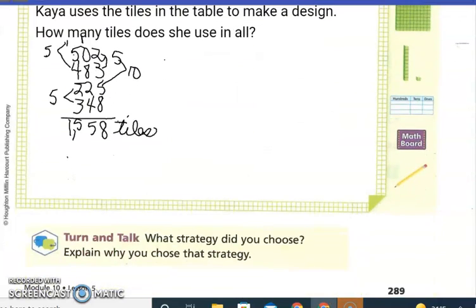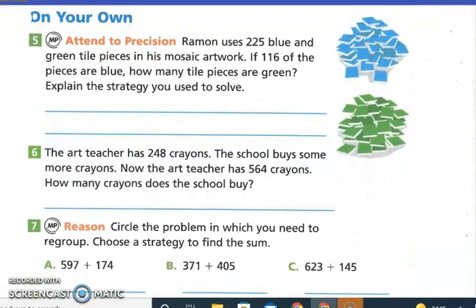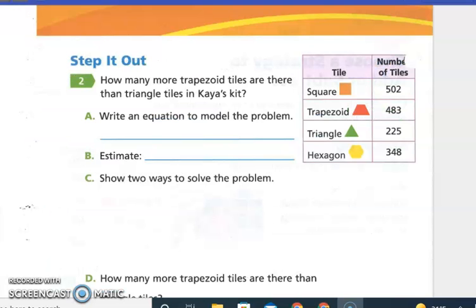Okay, we're going to go on to the next page. So on your own it says attention precision - precision means that we're precise, that everything is exact. Okay, perfect attention for saying below. All right, now we're on the right page. Step it up: how many more trapezoid tiles are there than triangle tiles?